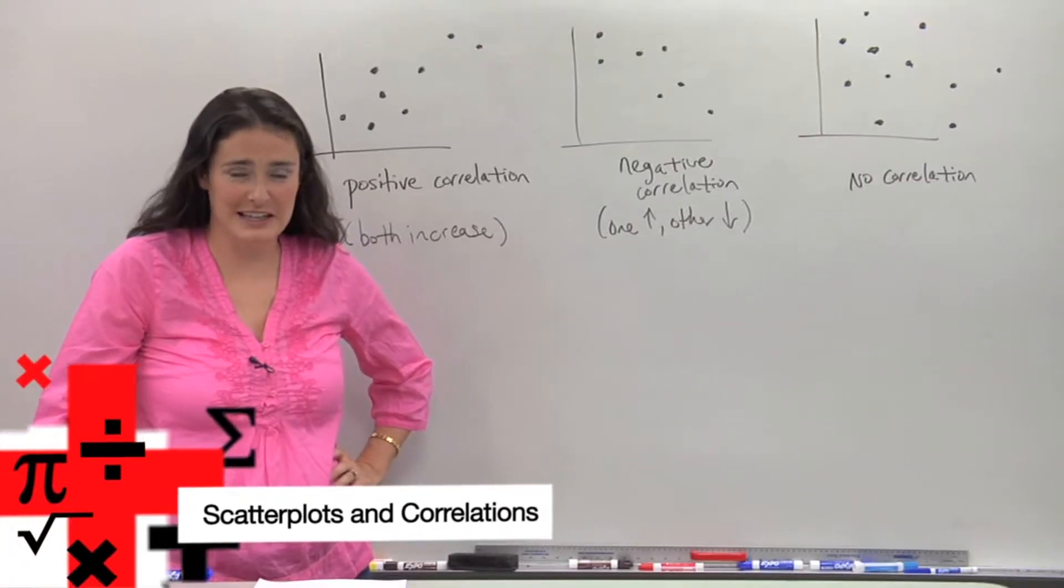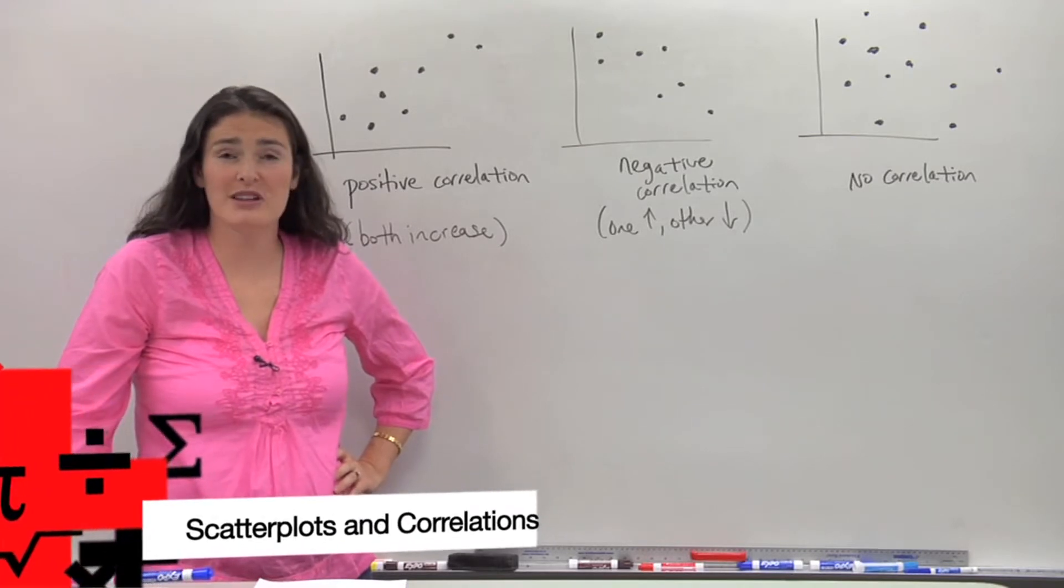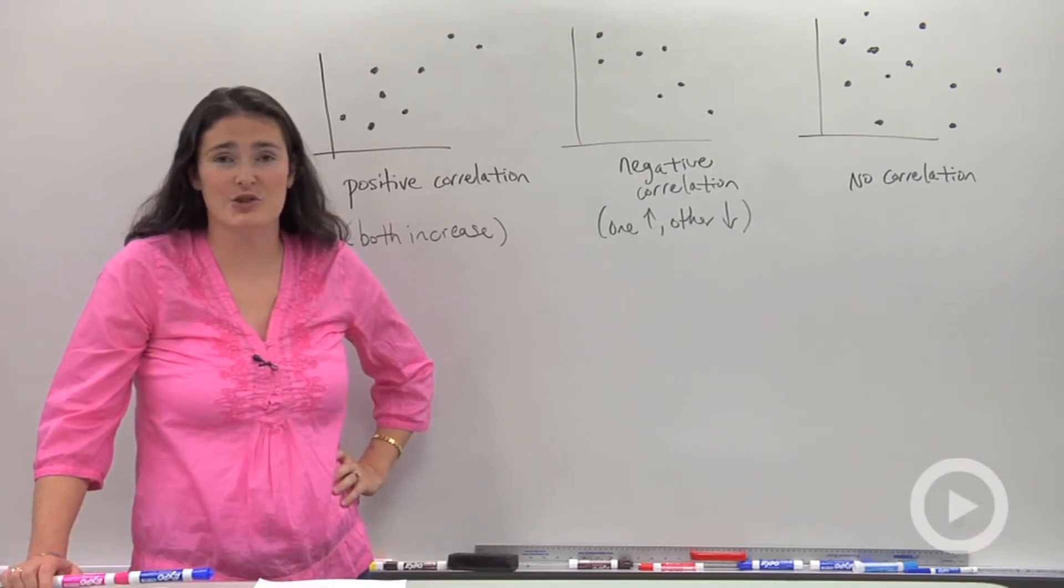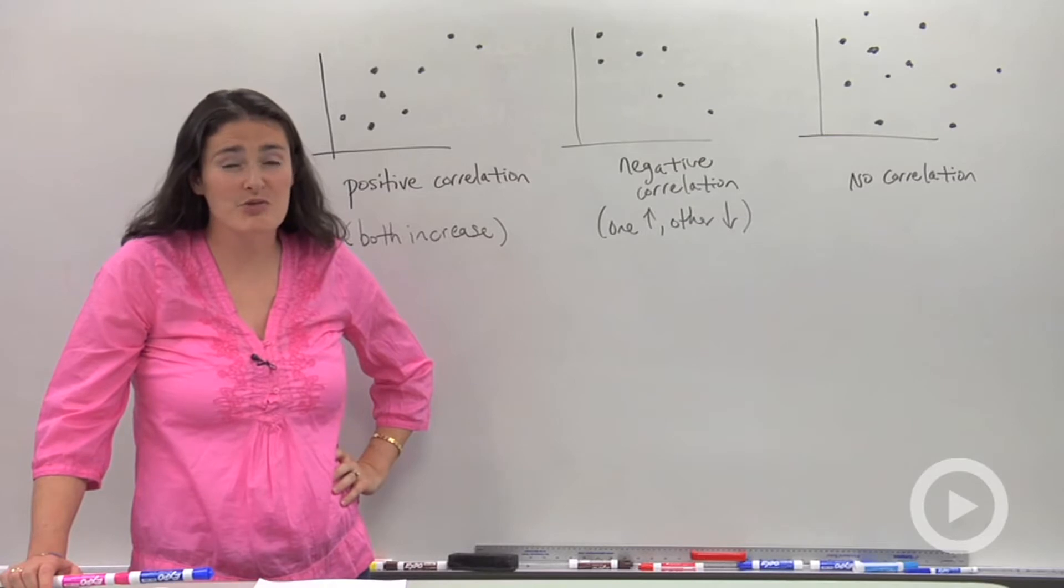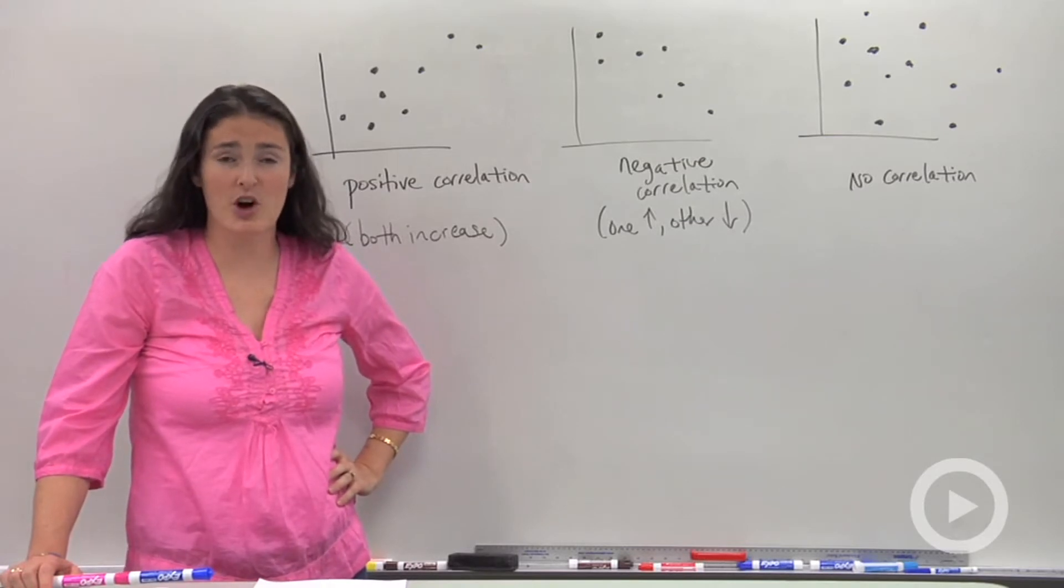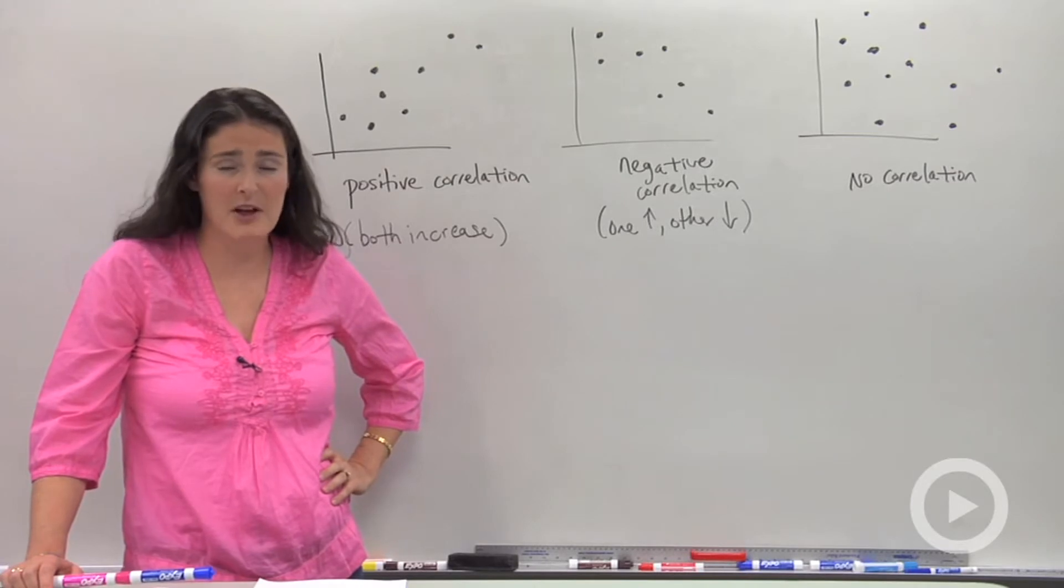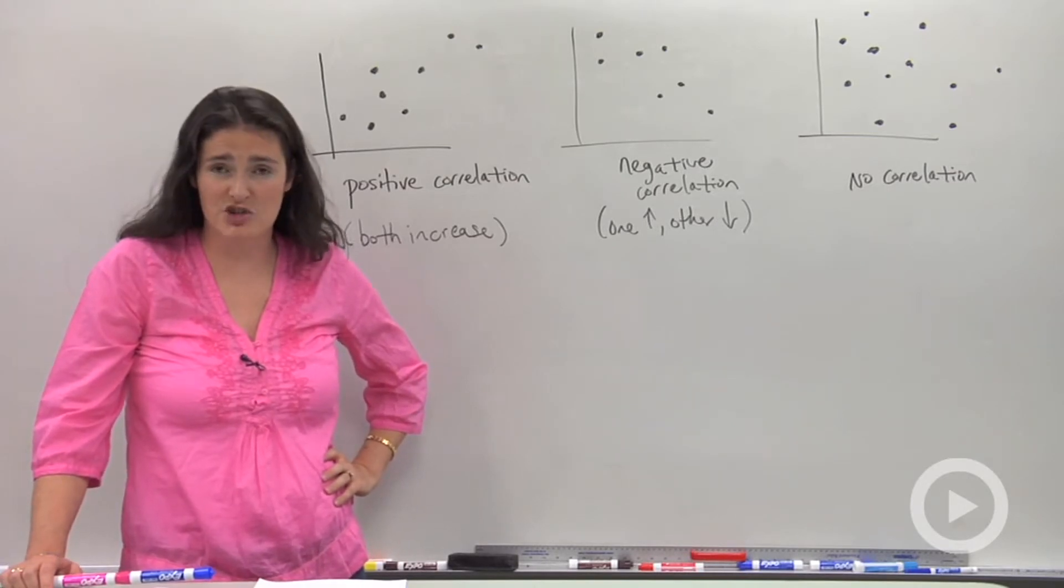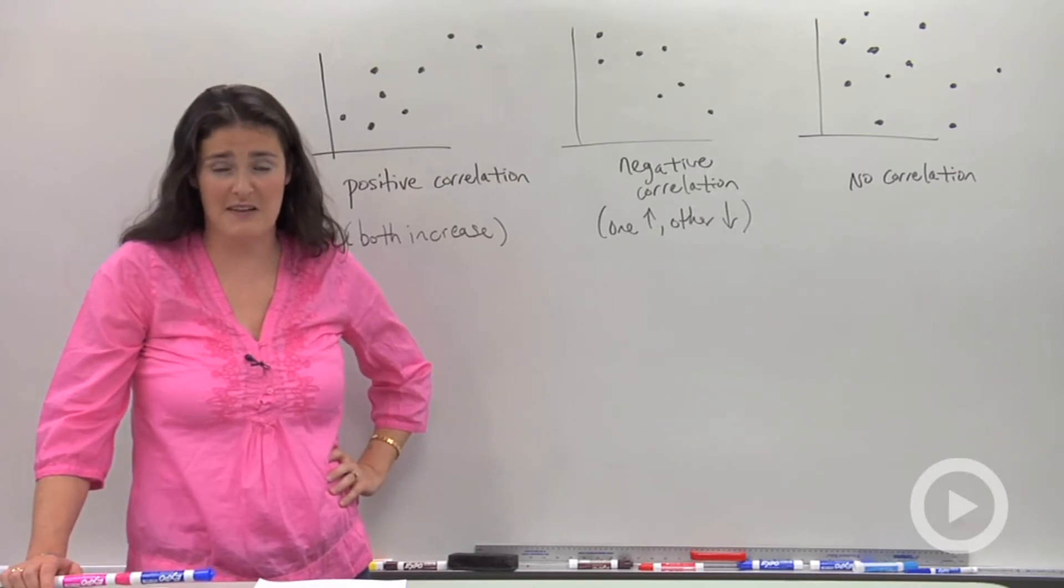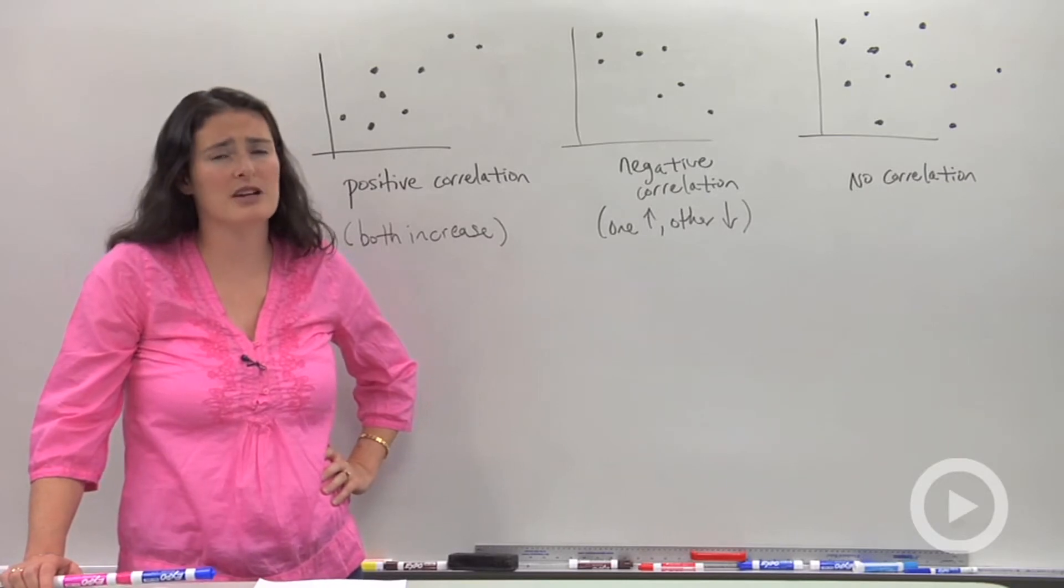Correlation is an important topic to get straight in your head because it shows up a lot on standardized tests and high school exit exams. But you guys, it's really not as hard as it sounds. Correlation relates to slope. If you know what slope is, it's the same idea. Correlation is also tied to trend lines or lines of best fit. Let me show you what I'm talking about.